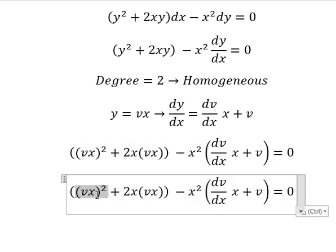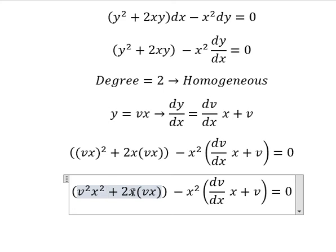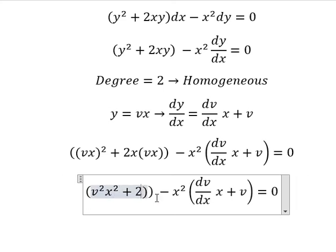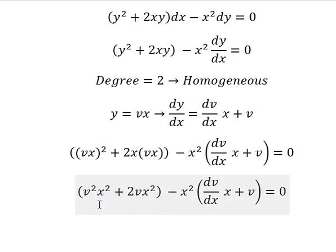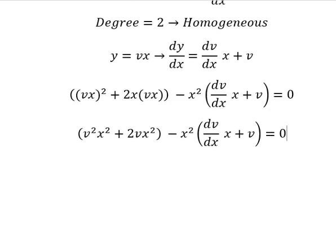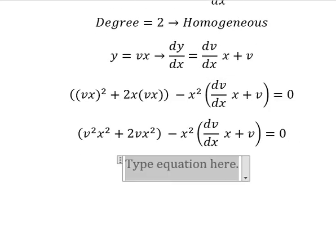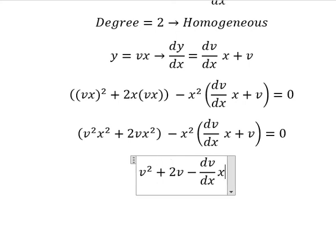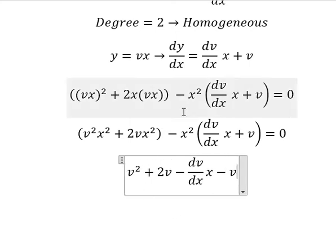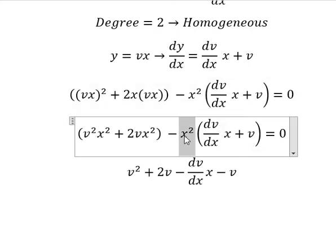This one we have v square x square, this one we have 2vx square. Now we need to simplify x square for both sides. And we have v square plus 2v minus dv over dx times x minus v, because we cancel about x square.